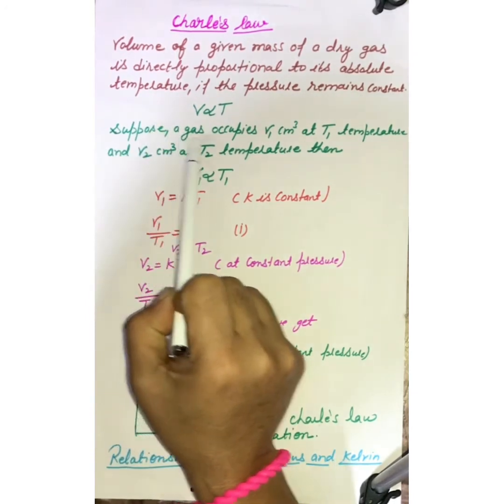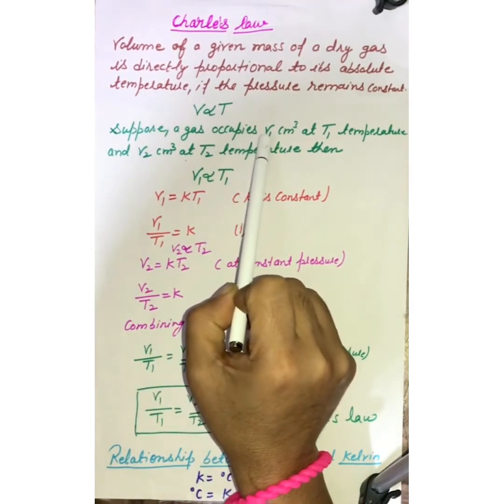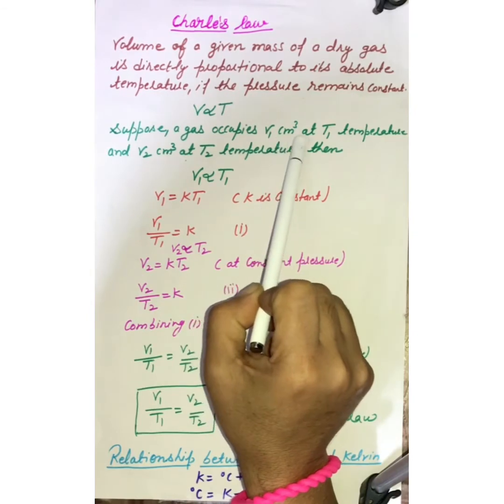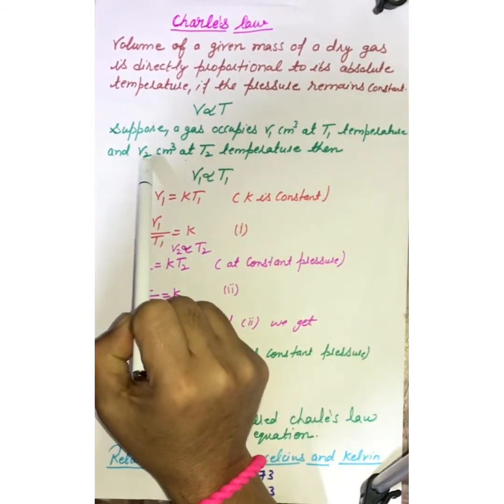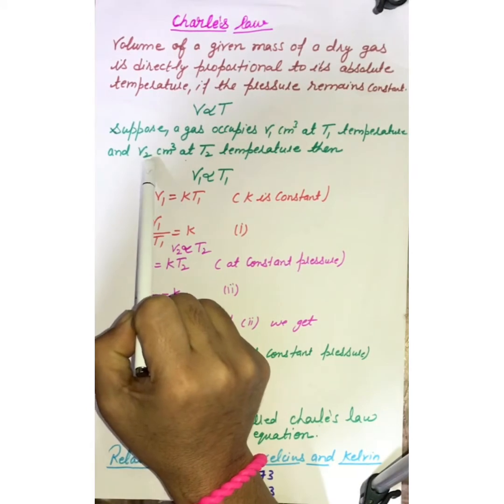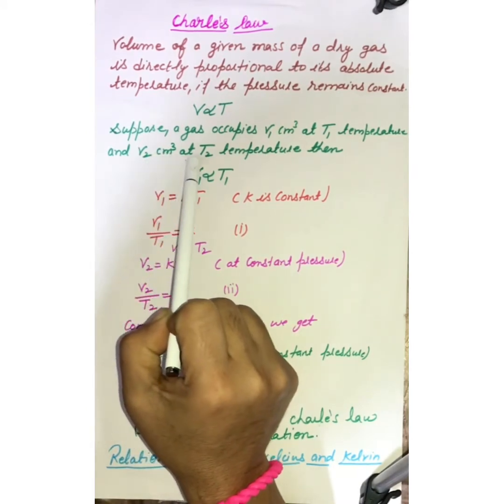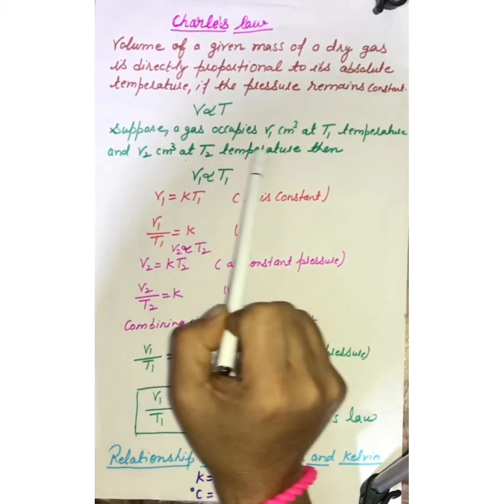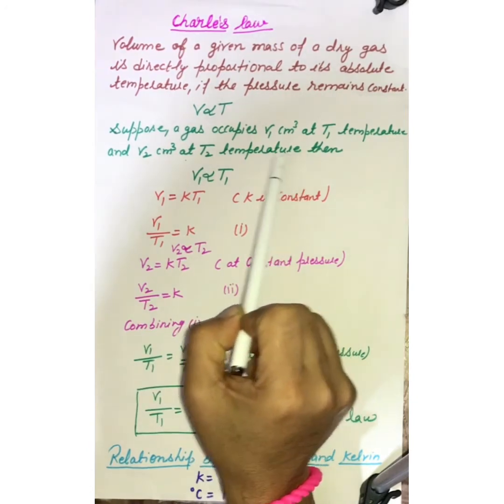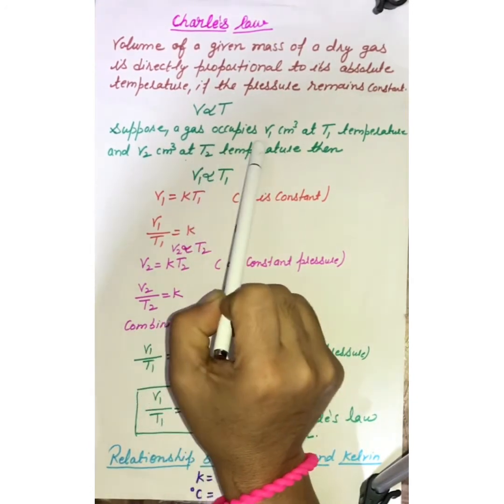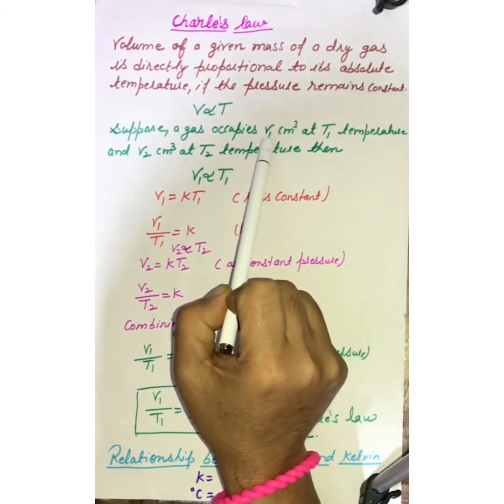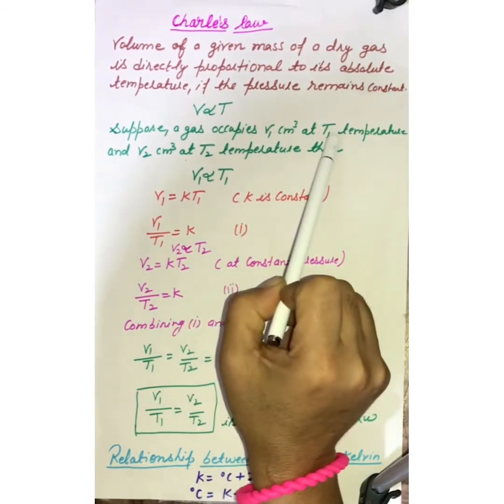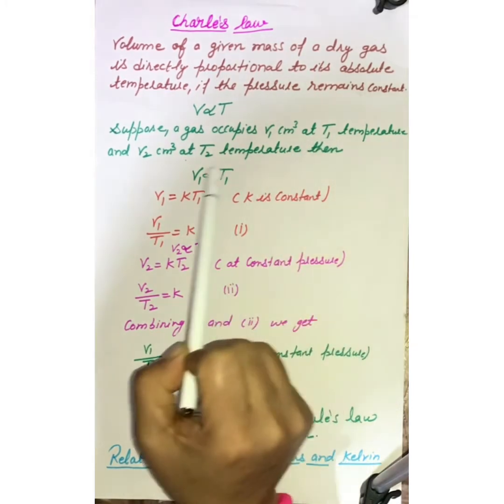Here, suppose a gas occupies volume V1 cm³ at T1 temperature and volume V2 cm³ at T2 temperature. Means, gas ki jo initial conditions hain, initial condition bhi kya hai? Volume is V1 cm³ and temperature is T1.